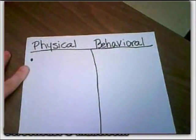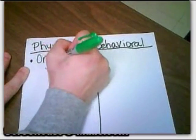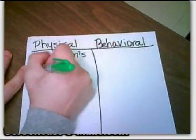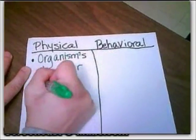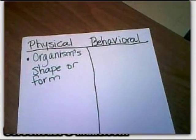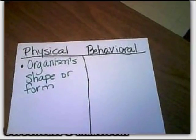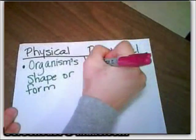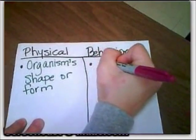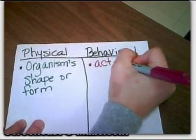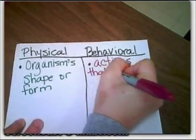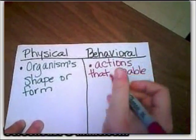Is that maybe the difference between them? That's great. So I think it would be a good time to start with a simple description of physical — that would be the organism's shape or form. And for behavioral, what did you say? Maybe the things that they do that help them survive — the things they do that help them eat and reproduce. Actions that enable survival.